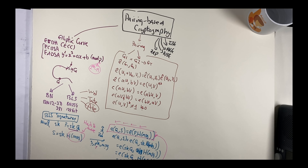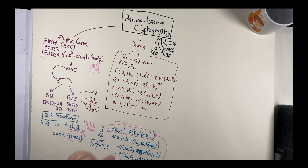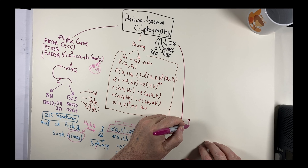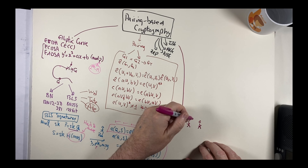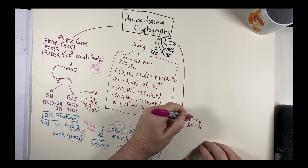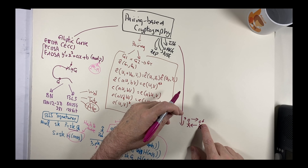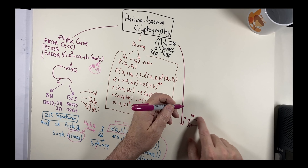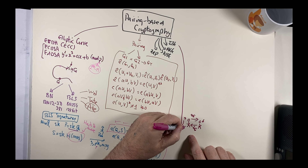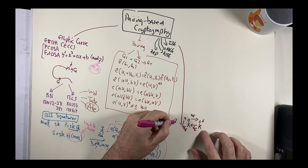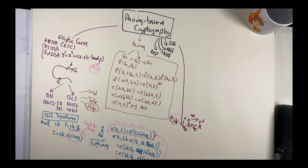Let's look at tripartite key exchange using pairings. In the standard Diffie-Hellman method, Alice generates 'a', Bob generates 'b', they exchange a·G and b·G, and end up with a·b·G on both sides. But what if we add Carol? With three parties it is difficult to generate a shared encryption key using standard Diffie-Hellman.